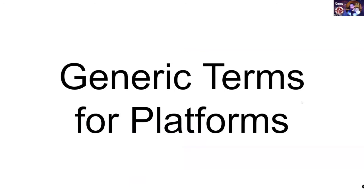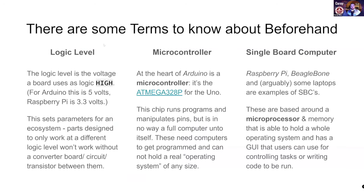Here are our generic terms — three that I really want to make sure we have solid. The first one is logic level, and this is something that can be sneaky. The logic level is the voltage that's used as the logic voltage, or the 'high.' So when you write Arduino digital write high, it's at five volts on an Arduino. If you do the same analogous thing on a Raspberry Pi, it's 3.3 volts. That doesn't directly matter when you're working entirely in one ecosystem, but it will matter if you ever try to cross platforms or get pieces that weren't specifically designed for that platform.